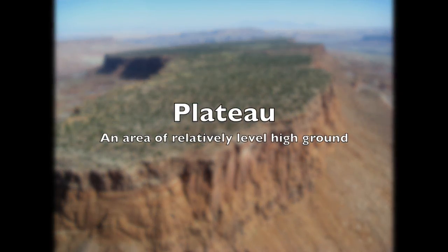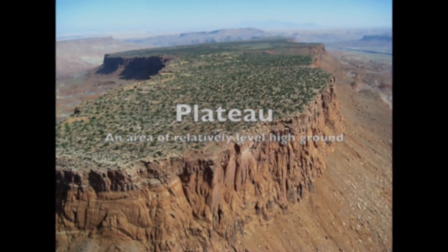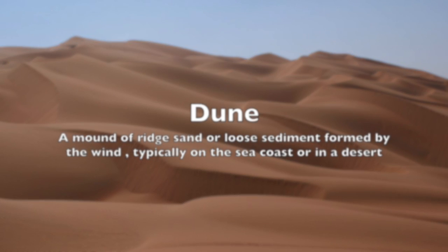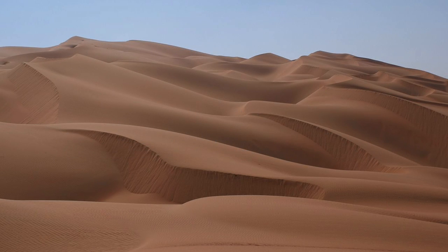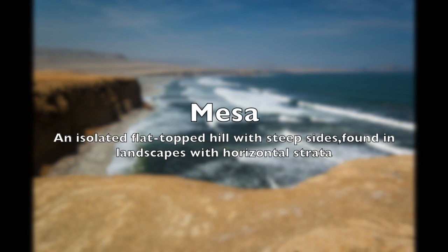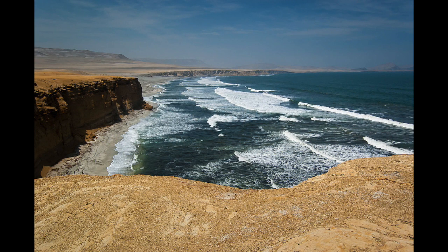Plateau: an area of relatively high ground. Dune: a mound or ridge of sand or other loose sediment formed by the wind, especially on the seacoast or in a desert. Mesa: an isolated flat-topped hill with steep sides, found in landscapes with horizontal strata.